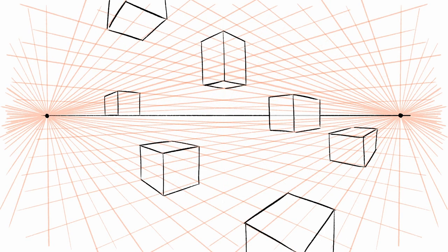One thing I don't like about one-point perspective is that some edges of the boxes are in perspective while other edges are not, which creates a kind of distortion. Now let's go to two-point perspective — you can already see it has a lot more depth than the one-point perspective.